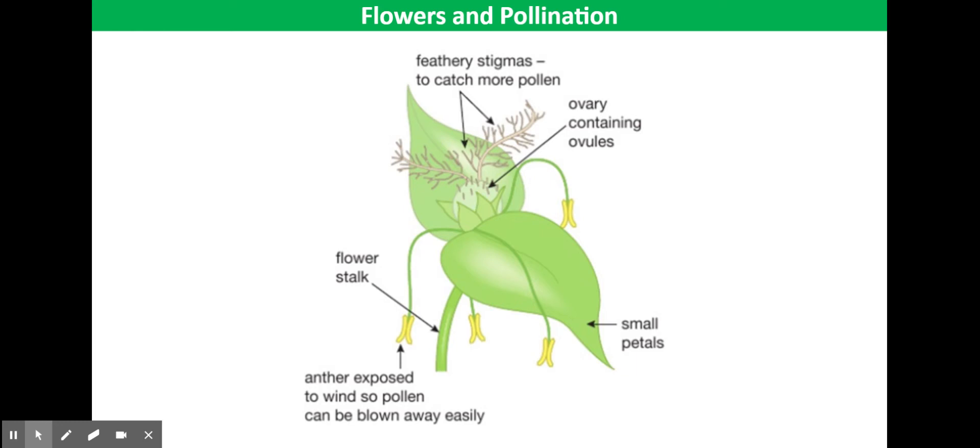Similarly, the nectar isn't scented in any way as they don't need to attract insects. They produce large amounts of pollen to increase their chances of pollination, and the pollen grains tend to be smooth and light to be carried easily by the wind.